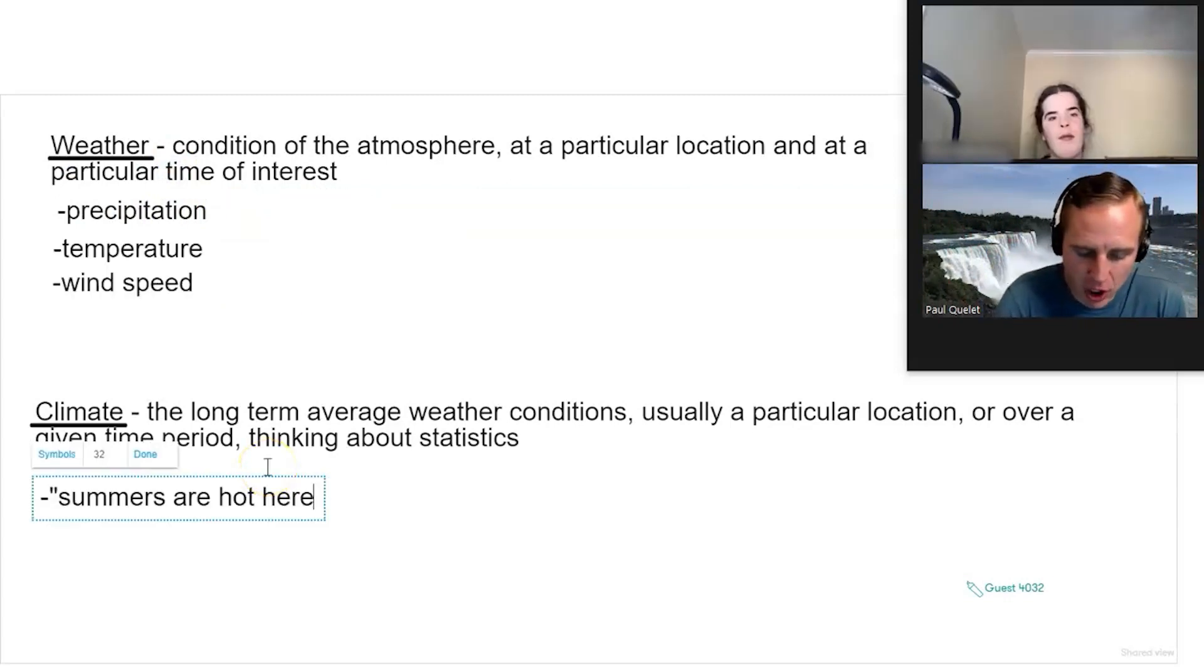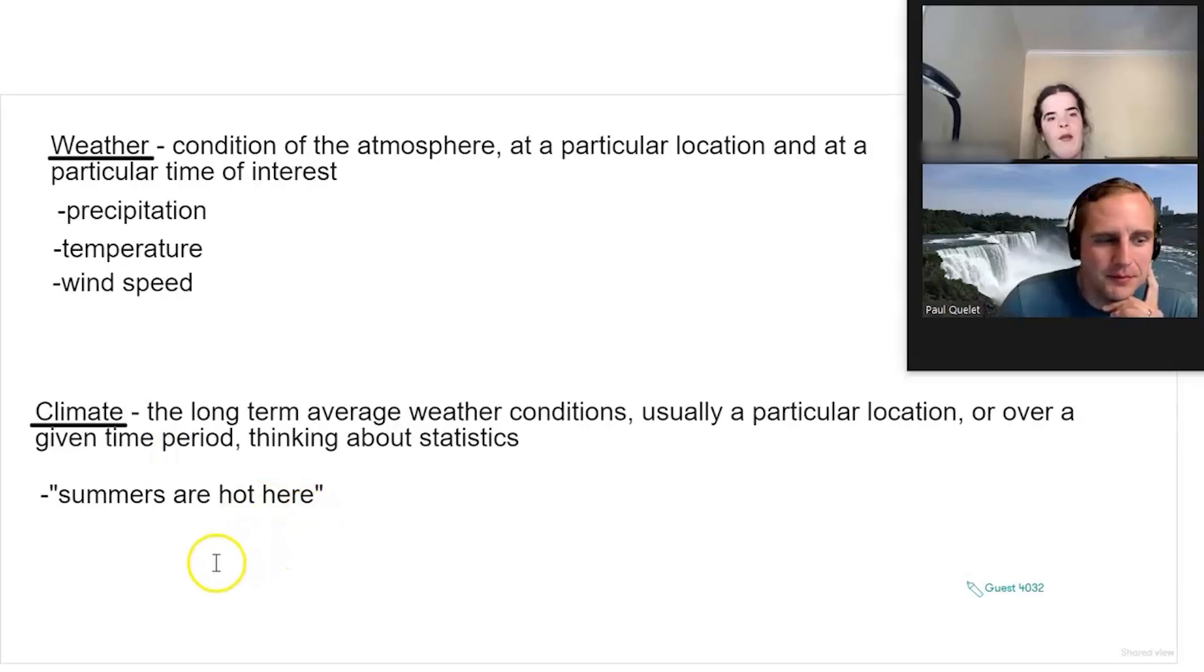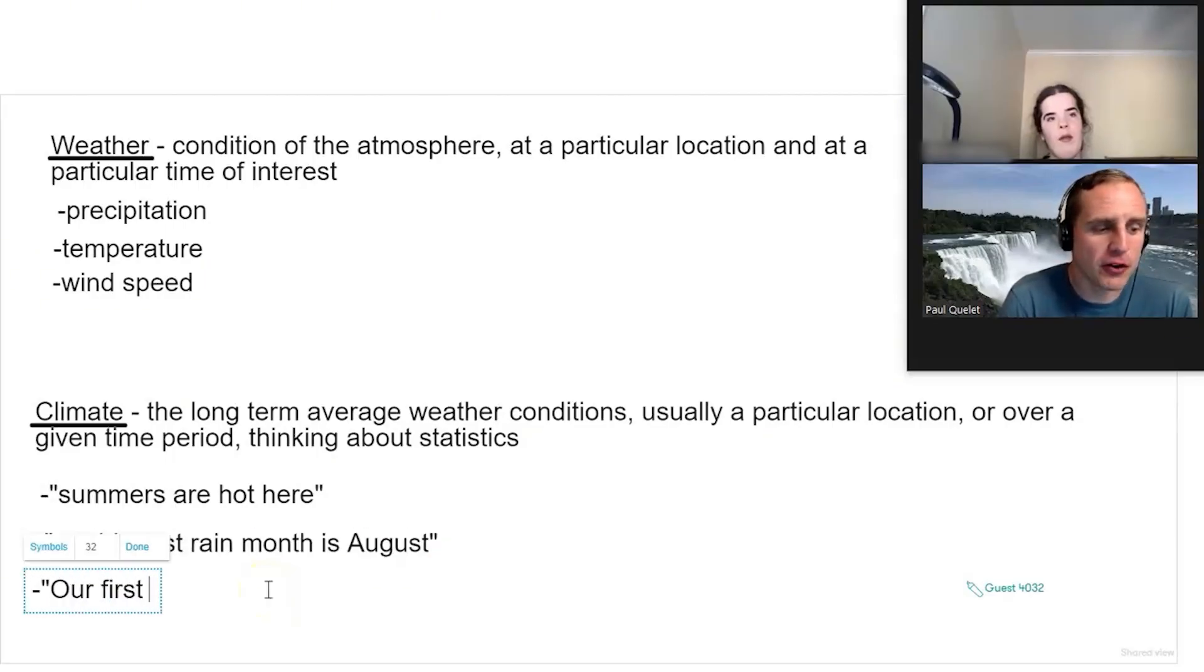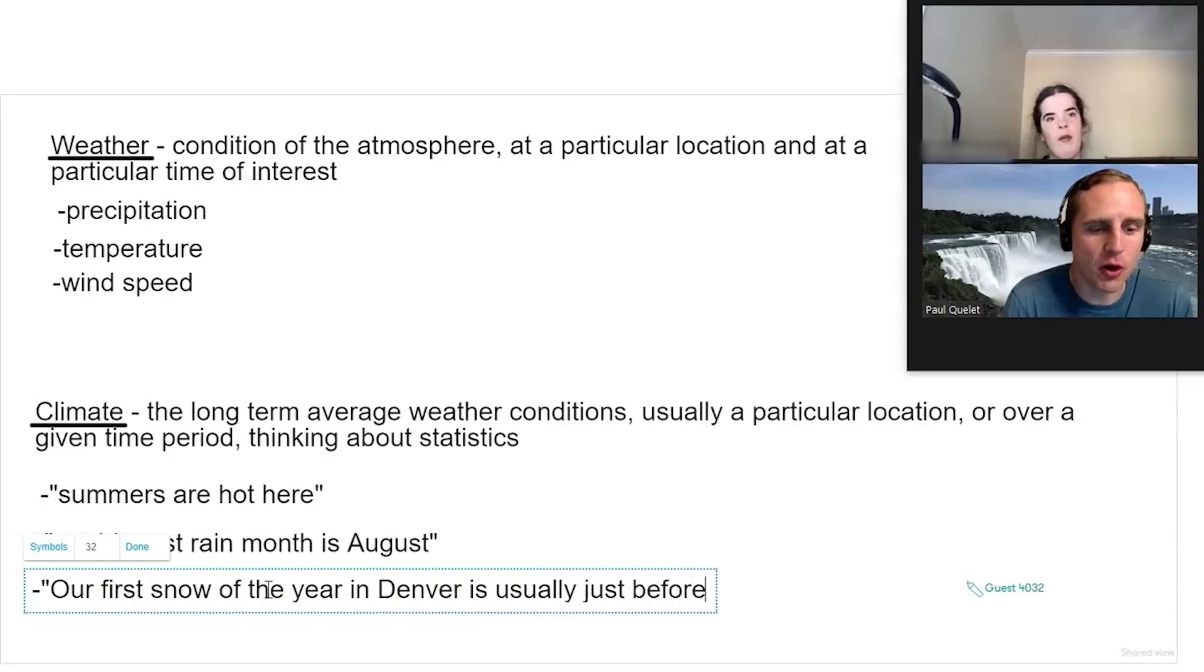So if I say summers are hot here, that's a statement of climate, right? Or what if I said our biggest rain month is, let's say, August. We could also say our first snow of the year in Denver, that's close to where I live, is usually just before Halloween.